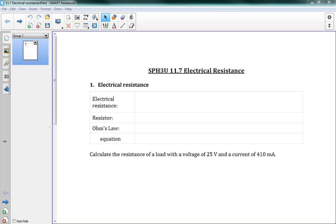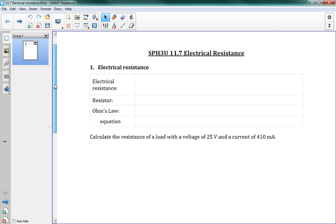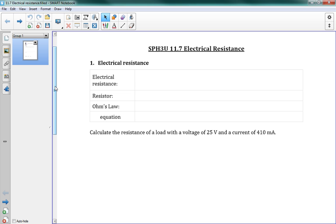This is 11.7 Electrical Resistance, and this is going to be another nice short one. It goes along well with voltage and current. Now we have resistance, which is the last piece. Those three together are the three really important pieces in these circuits.